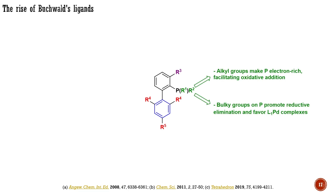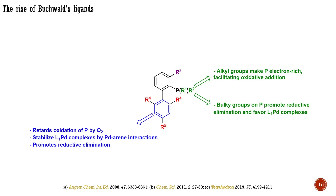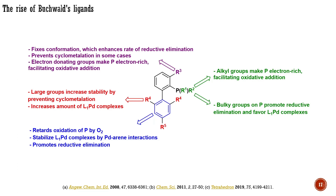The large substituents on phosphorus lend stability to the ligands by slowing the rate of oxidation of the phosphorus atom, making these ligands practically useful as they can be stored under ambient conditions. The bulkiness of the ligands also facilitates the formation of monoligated palladium complexes and enhances their relative stability. The lower aromatic ring can serve as a ligand for the palladium center, further stabilizing the monoligated palladium intermediates. Substituents R3 and R4 enhance catalyst stability by suppressing cyclometallative pathways for deactivation. The presence of R3 also favors the conformation in which palladium sits over the bottom ring, facilitating the rate of reductive elimination. The electron-donating or withdrawing properties of R3 substituents serve as an additional factor for controlling the electronic properties of the ligand.